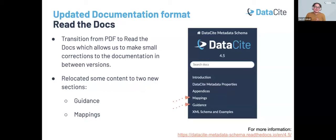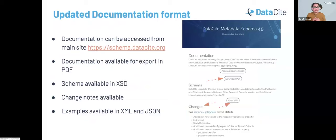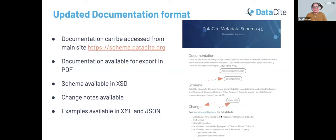We've moved to Read the Docs and also moved some content to two new sections, mainly mappings and guidance. You can access this directly from the link provided, or from the main schema.datacite.org page, where you'll see a link to the documentation under 'access documentation.' You can still export the documentation as PDF if you wish, and any small edits or typo corrections will be reflected in that PDF export, which will include the date when it was last updated. You can also find the whole schema in XSD, release notes, complete examples in XML and JSON, and all of that on the main site.